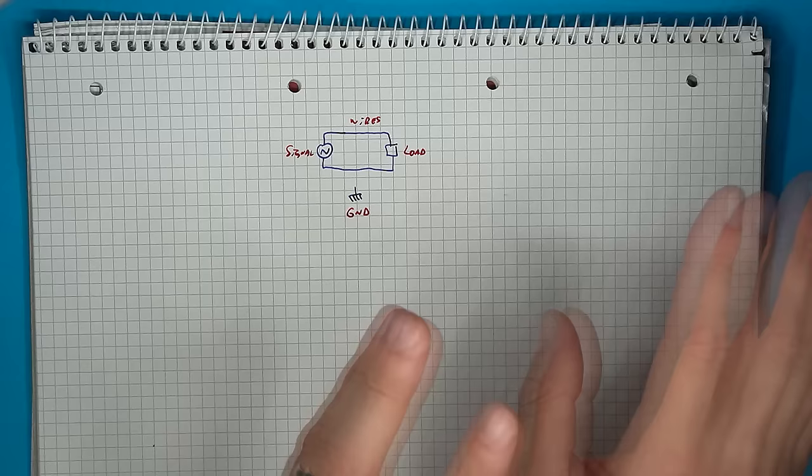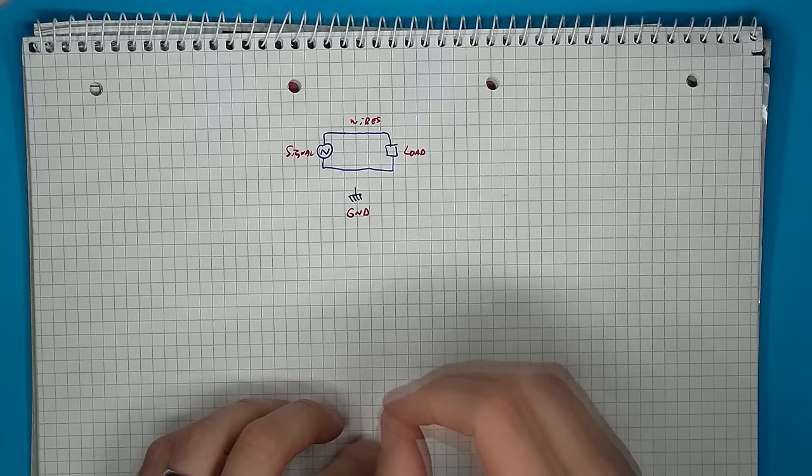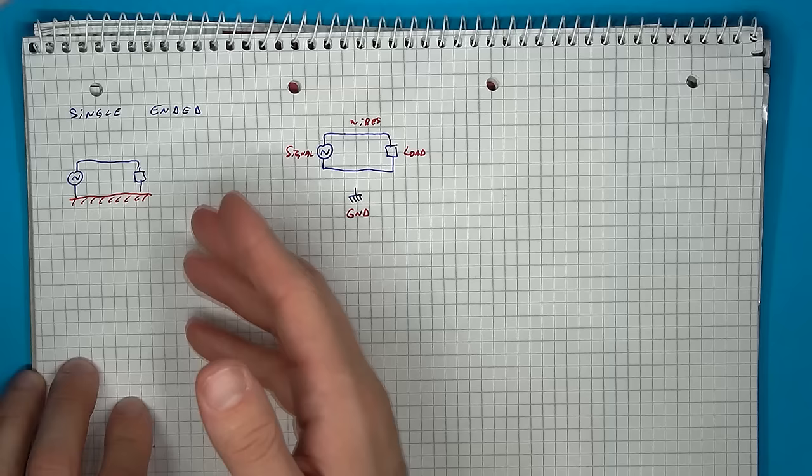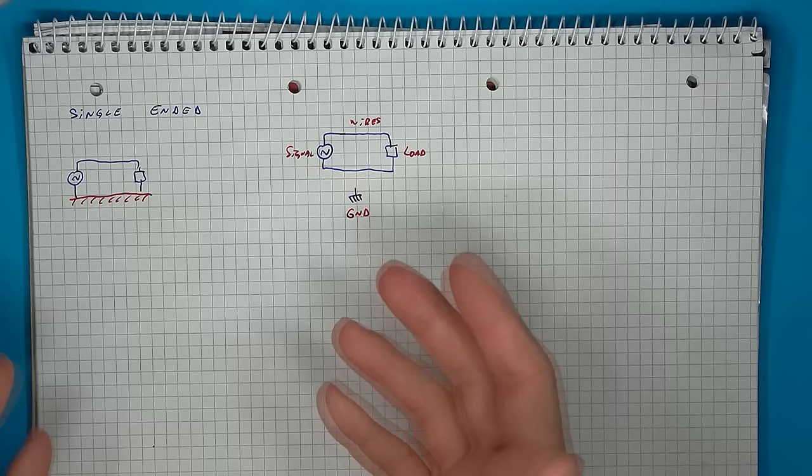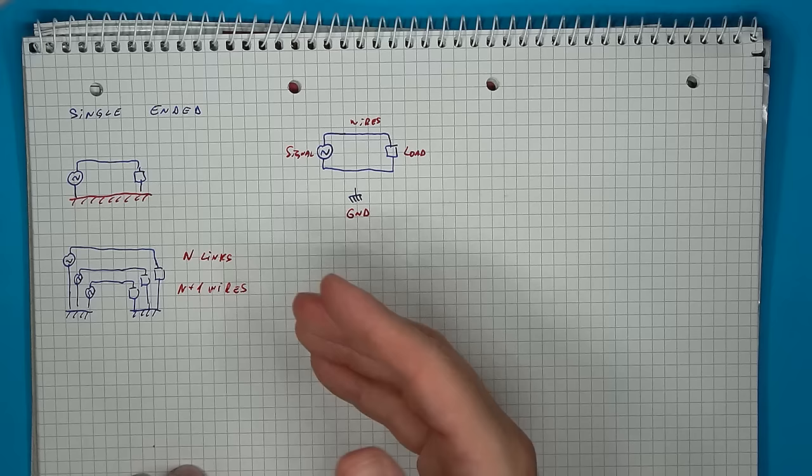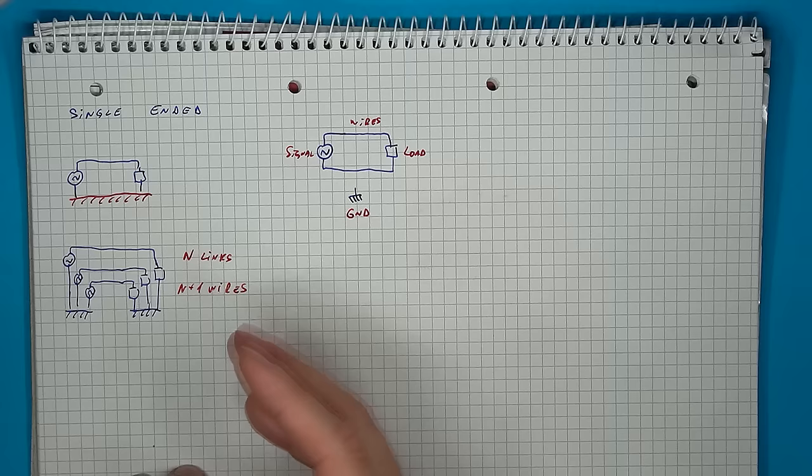This brings us to the first important term related to signal transmission, which is single-ended signaling. With this method, one of the wires is the signal line, whereas the other is the reference, the ground. This is the most simple form of interconnection, and it has certain advantages and disadvantages. If you need to transmit, say, 10 signals, you will only need 11 wires, since all of the signals have the common ground.